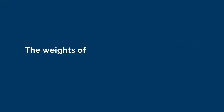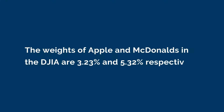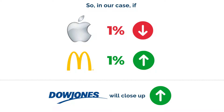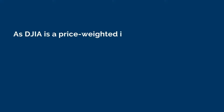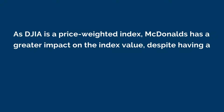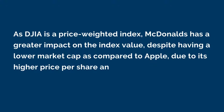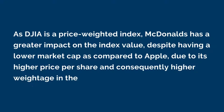The weights of Apple and McDonald's in the Dow Jones Industrial Average are 3.23 percent and 5.32 percent respectively. So in our case, if Apple goes down by one percent and McDonald's goes up by one percent, then the Dow Jones Industrial Average will close up in the green. As the DJIA is a price-weighted index, McDonald's has a greater impact on the index value despite having a lower market cap than Apple, due to its higher price per share and consequently higher weightage in the index.